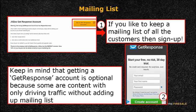Heading back to your seller dashboard, you'll have the option to apply for jvzoo.com's GetResponse account. According to jvzoo.com, this account will ensure that your buyers will be added instantly to your mailing list. Getting a GetResponse account will allow you to try it free on a 30-day trial.